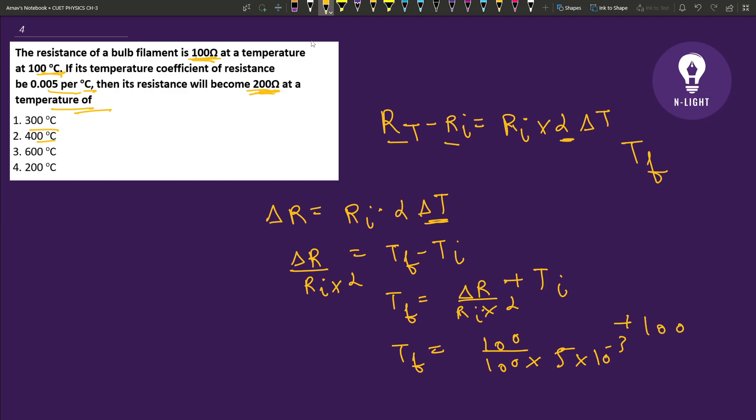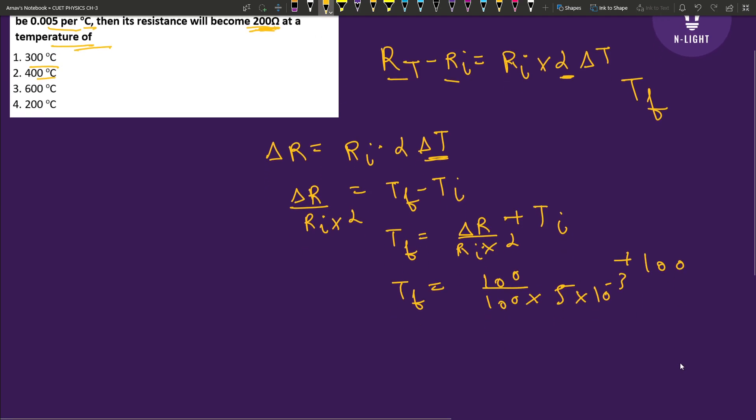If we solve it, the final temperature equals 1000 upon 5 plus 100.